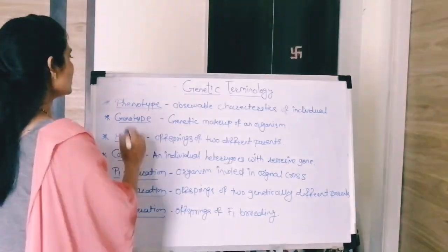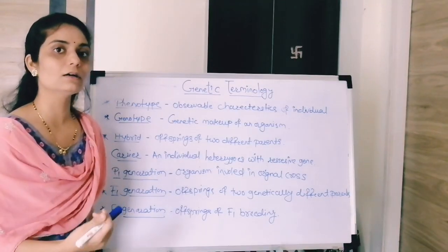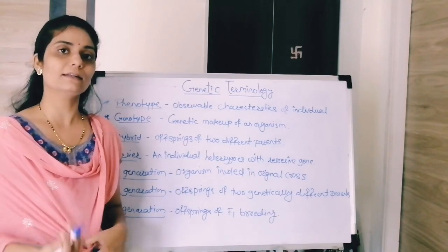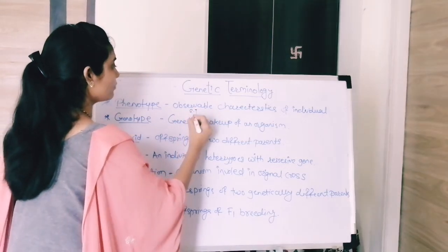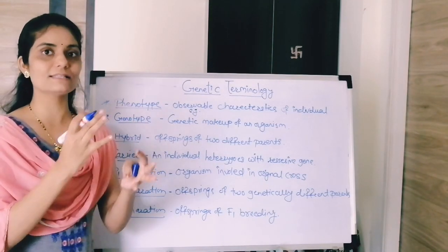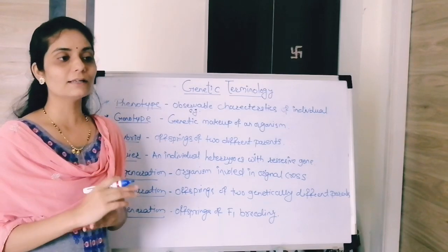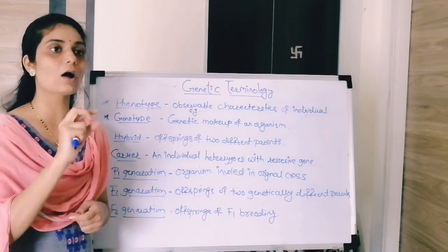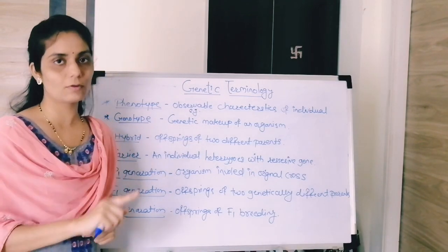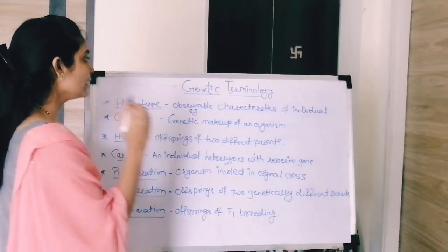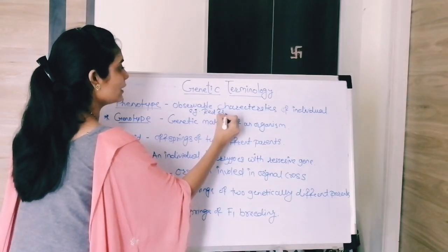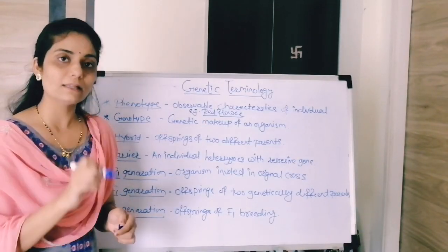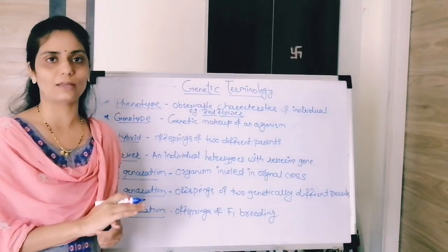The next term is phenotype. Phenotype is the observable characteristics of an organism. For example, you can see a flower is red in color, you can see the height of a plant — whether it is tall or dwarf — or you can see the shape of a seed, whether it is round or wrinkled. That is called the phenotype. Simply put, phenotype is the characters which you can see with your eyes.